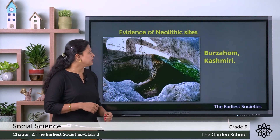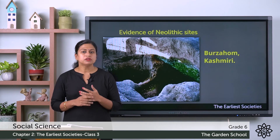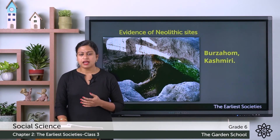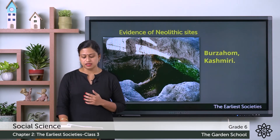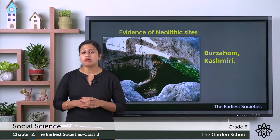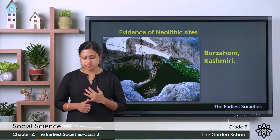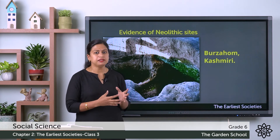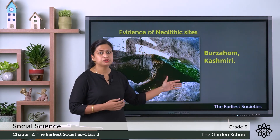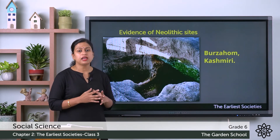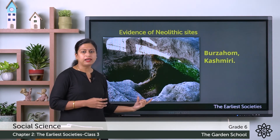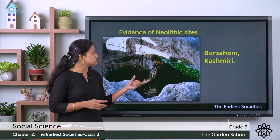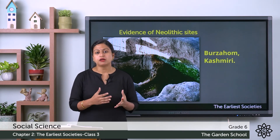The second site is Burzahom in Kashmir. In the Kashmiri language, Burzahom means 'place of birch' — birch being a type of tree. It is believed that this site existed around 3000 BCE. Archaeologists have found large varieties of stone tools, clay pots, and dwelling pits. The people built house pits by digging into the ground with steps leading into them. These were circular and oval in shape, narrow at the top and wide at the bottom, and usually covered with leaves and dry branches.